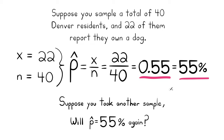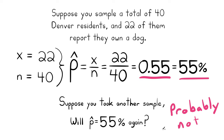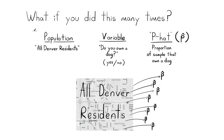But suppose you took another sample of 40 different residents — would you get P-hat equals 55 percent again? Probably not. We'd be sampling different people and the number owning a dog probably would not equal 22. If we took a different sample we'd likely get a different value of P-hat. Imagine taking a lot of samples from the same population, each time collecting 40 people and finding the proportion who own a dog.